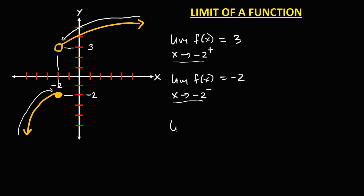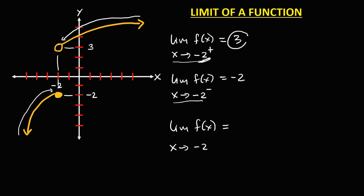Then to find the limit of f of x as x approaches negative 2, we first need to check the limit from the right and the limit from the left. Since the limit from the right is not equal to the limit from the left, this limit does not exist.